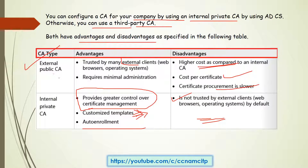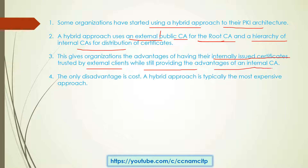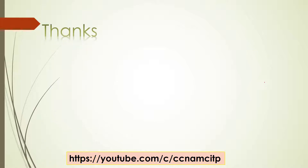Some organizations have started using a hybrid approach to their public key infrastructure architecture. This is basically a combination of public and private — a merge of external and internal certificate authority. A hybrid approach uses an external public CA as the root and a hierarchy of internal CAs for distribution of certificates. This gives the organization the advantage of having internally issued certificates trusted by internal clients, while still providing the advantages of an internal certificate authority. The only disadvantage is cost — a hybrid approach is typically the most expensive.